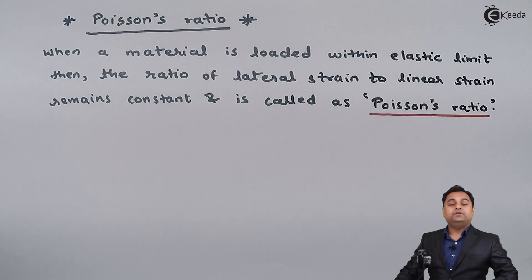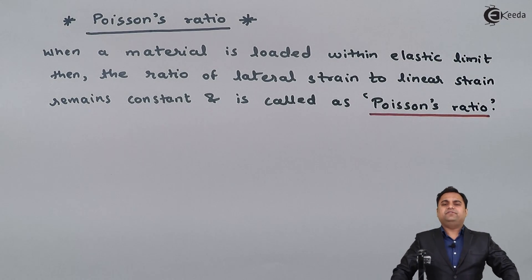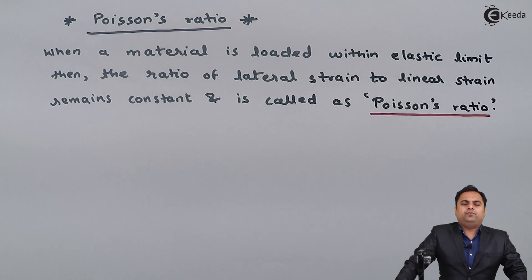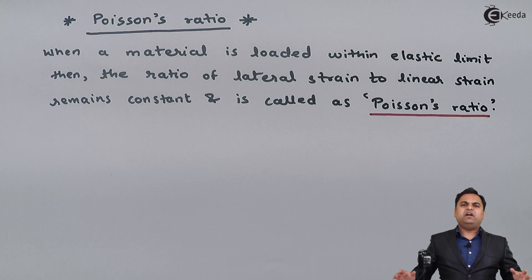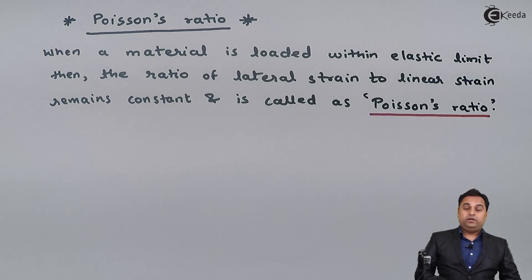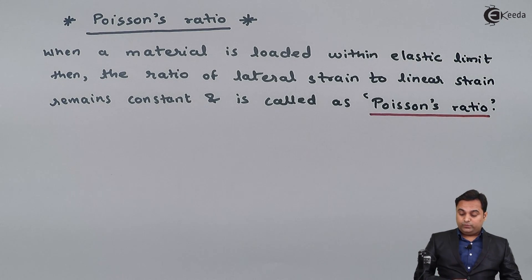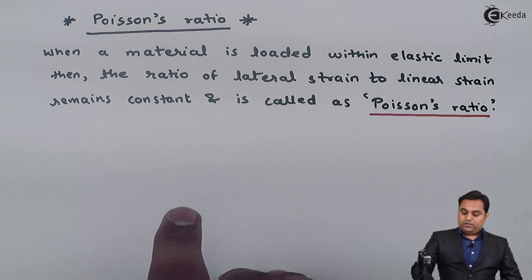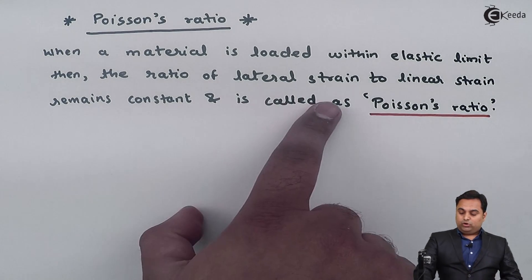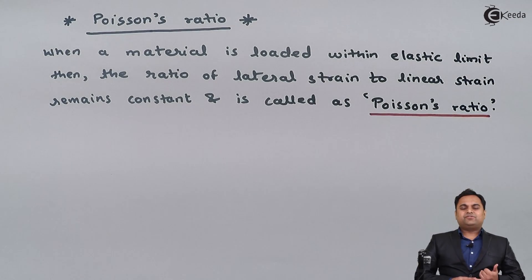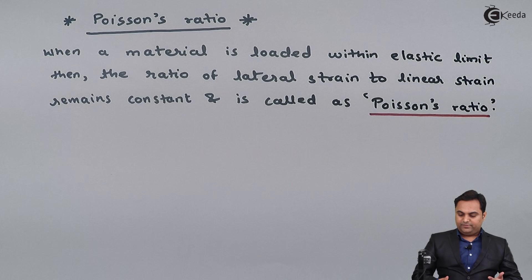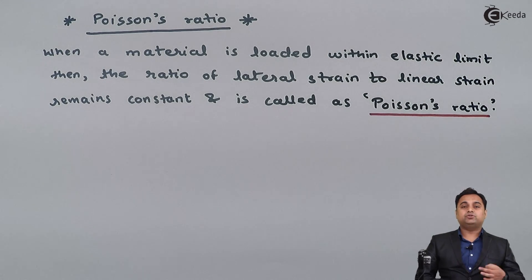So here I have written the definition of Poisson's ratio: if we have a material and when it is loaded within elastic limit, then the ratio of lateral strain to linear strain remains constant, and that ratio is called as Poisson's ratio.